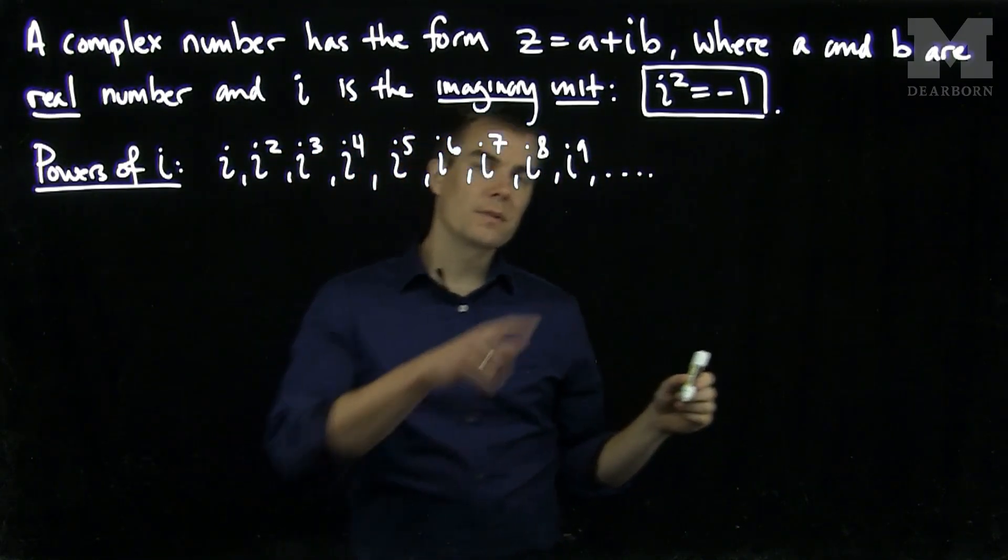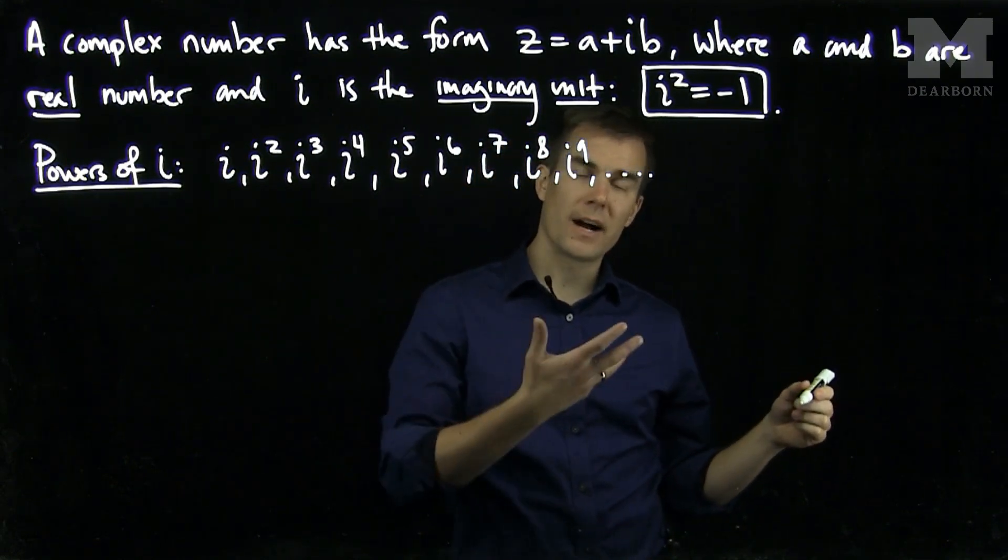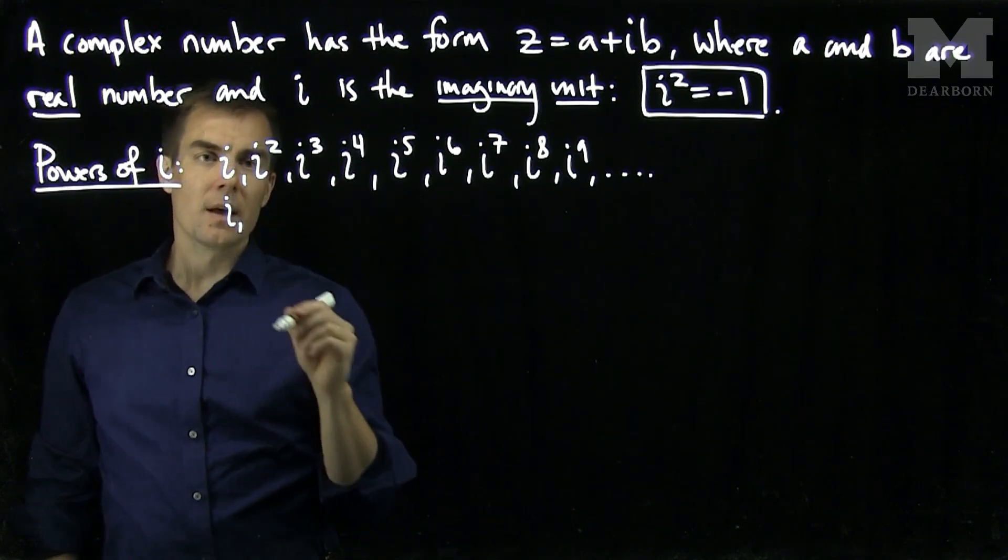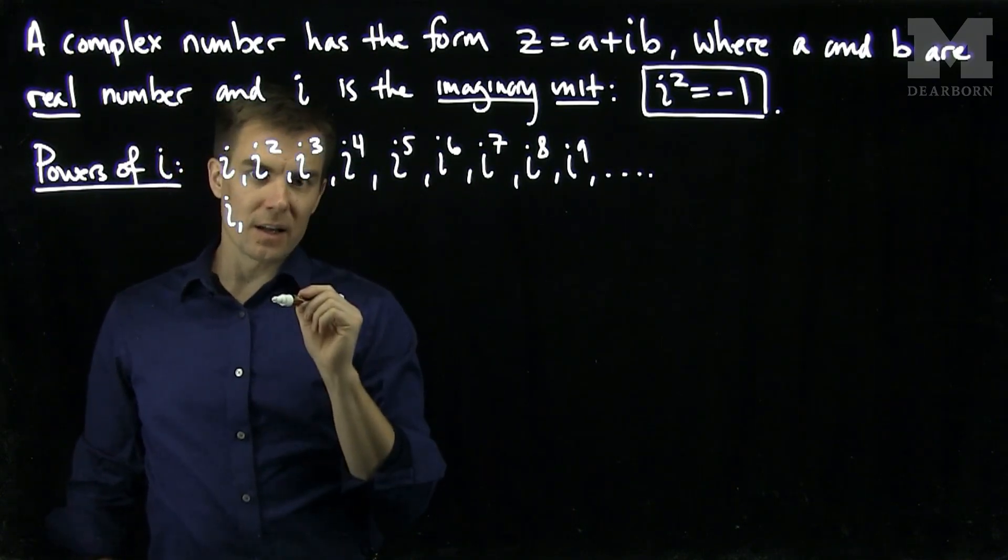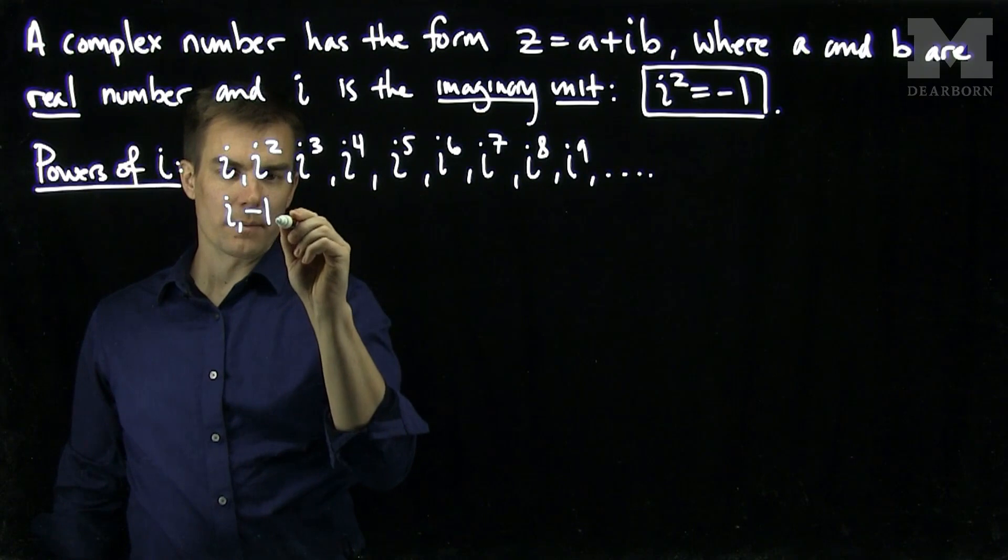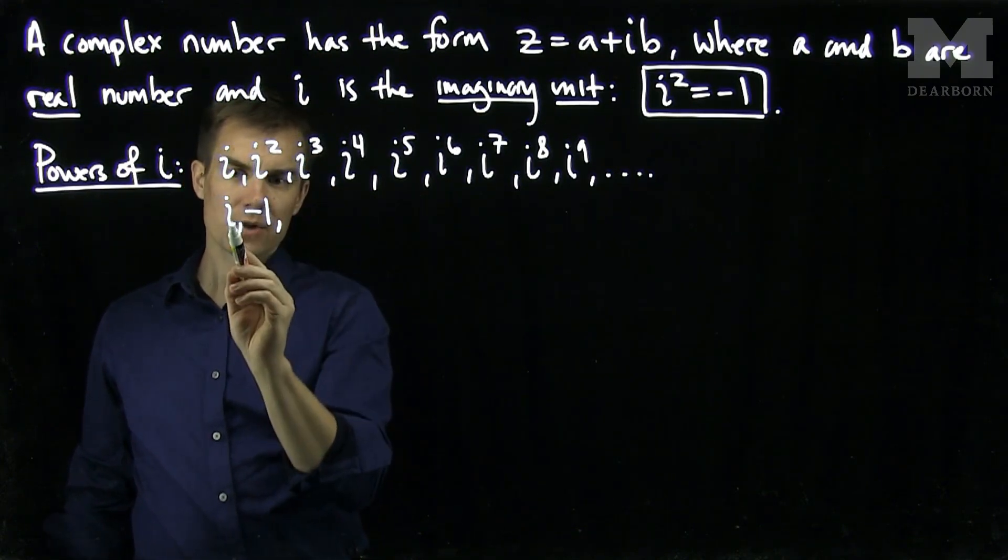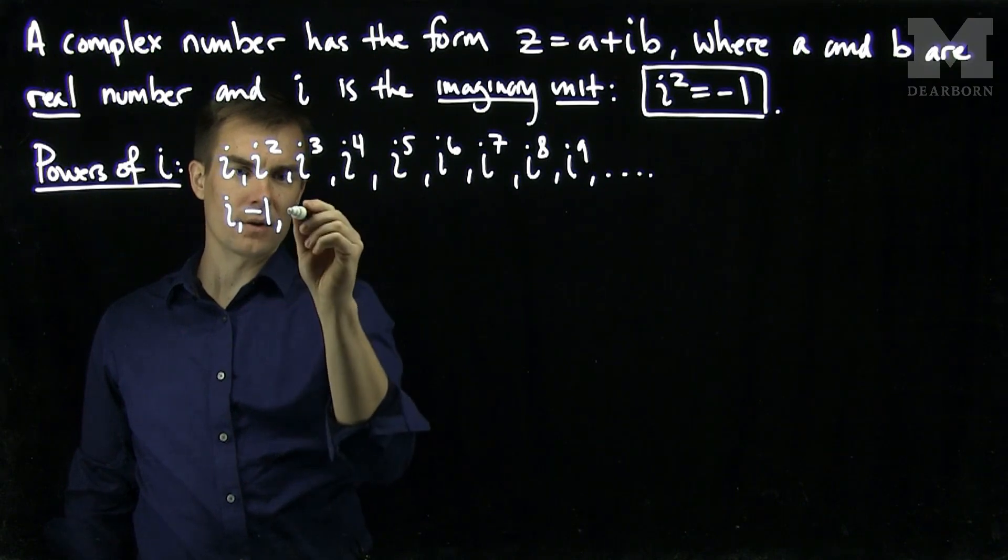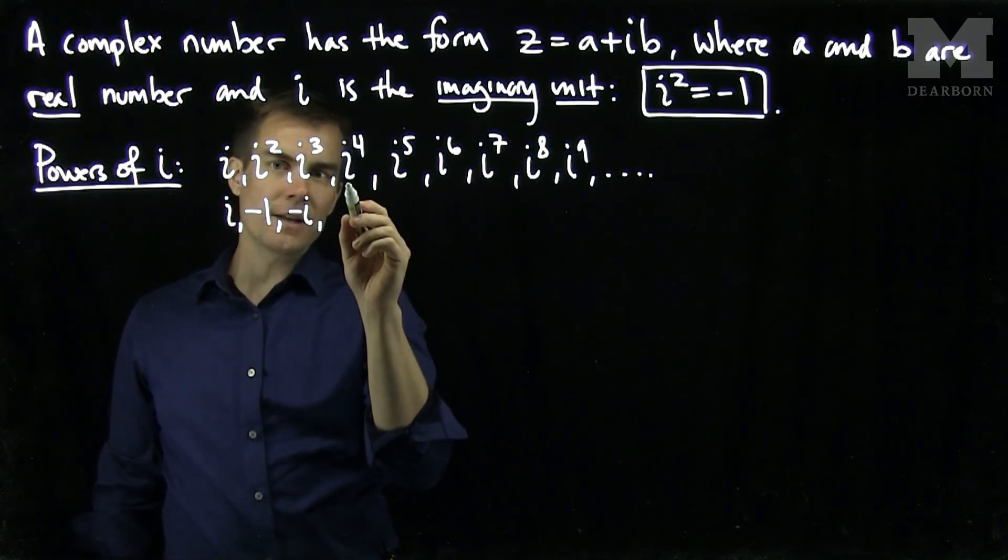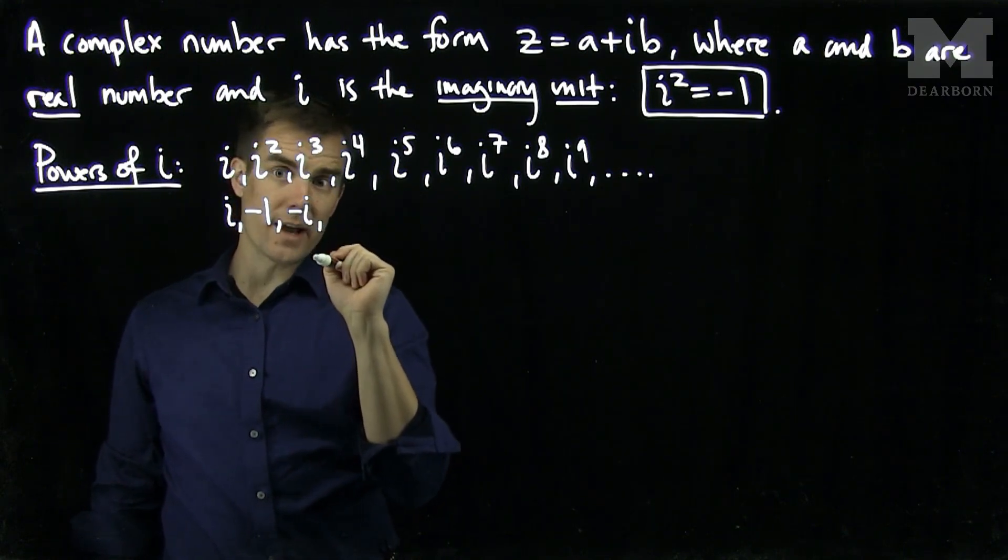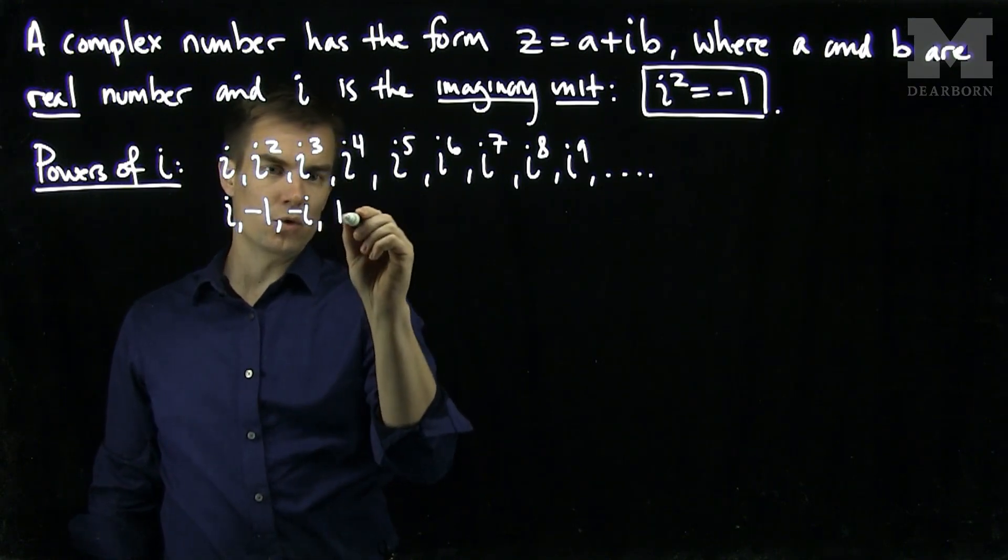We can now use the fact that i squared is negative one to simplify this list. i will remain as i, but now i squared, the second element in my list, will turn into a negative one. i cubed is i squared times i, so it will be i times negative one, or negative i. i to the fourth power will be i squared times i squared, or negative one times negative one, which will be a one.